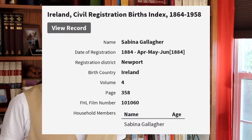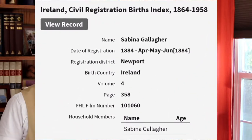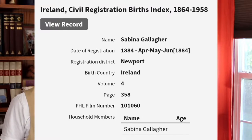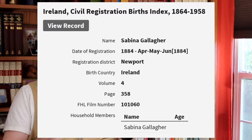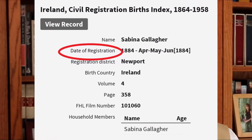Take a look at this Irish Civil Registration Births Index record for Sabina Gallagher. A quick glance might make you think Sabina was born in April, May, or June of 1884, but she was actually born on 4 March 1884. The thing I skipped over when I first encountered this source is the data label: date of registration. That date is when Sabina's birth was registered with the state, not when she was born.